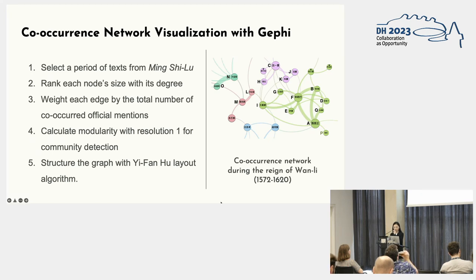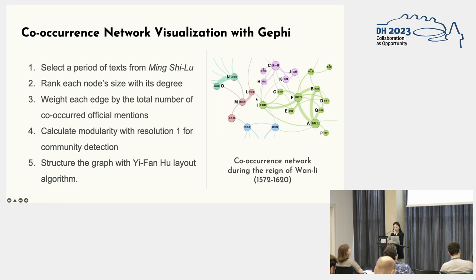If you direct your attention to the right side of the slide, you will see an example of our network visualization created for the reign of Wanli. Different colors on the nodes represent various communities detected through modularity calculation. Larger nodes indicate that the respective officials have a broader range of connections than others. Similarly, some edges are thicker than others, indicating stronger associations between two officials. In summary, the visualization provides an intuitive way to understand the relationships and communities of officials documented in our selected text.